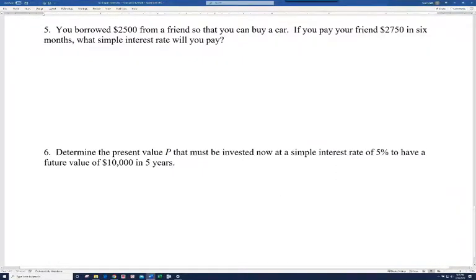It says you borrowed $2,500 from a friend so that you can buy a car. If you pay your friend $2,750 in six months, what simple interest rate will you pay? So he's like, man, I really want this car. I need to borrow a little bit more money and I'll pay you back in six months. I've got some money coming or whatever. So let's go ahead and plug these numbers into the formula. Notice we're looking for the simple interest rate. We're looking for R.